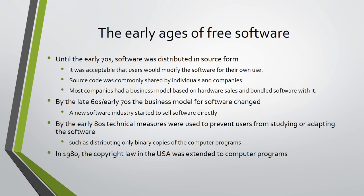By the late 60s and early 70s, the business model for software changed. A new software industry started to sell software directly, rather than fund its development from hardware revenue. By the early 80s, some companies started to use technical measures to prevent users from studying or adapting the software to their needs. A common such measure was to distribute only binary copies of the computer programs, and no source code.